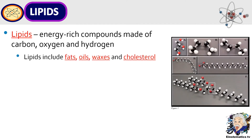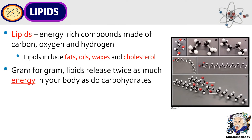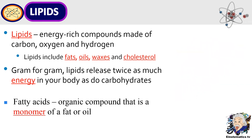Now let's proceed to lipids. Lipids are energy-rich compounds made up of carbon, oxygen, and hydrogen. Examples of lipids include fats, oils, waxes, and cholesterol. Gram for gram, lipids produce twice as much energy compared to carbohydrates.